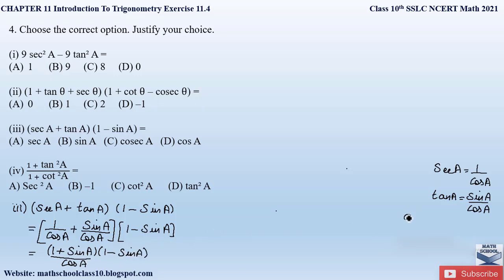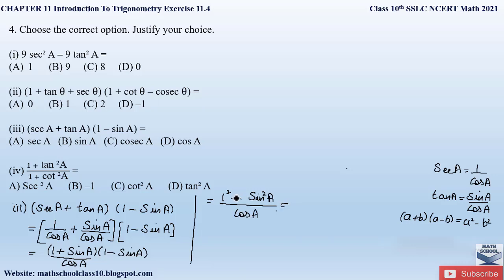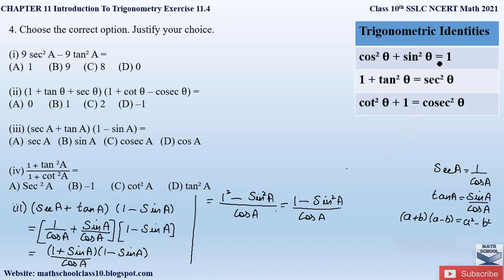We can observe that we can apply the identity (A plus B)(A minus B) equals A squared minus B squared, where A equals 1 and B equals sin A. Applying the identity, we get 1 squared minus sin squared A divided by cos A, which is 1 minus sin squared A over cos A. From the trigonometric identity cos squared theta plus sin squared theta equals 1, we rearrange to get cos squared theta equals 1 minus sin squared theta.